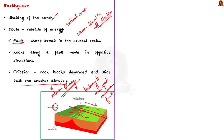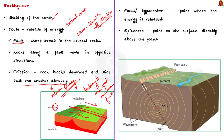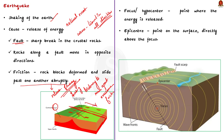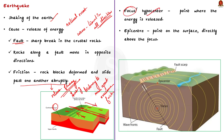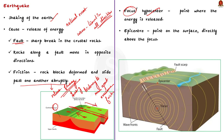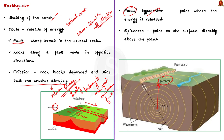The point where the energy is released is called the focus of an earthquake, also known as the hypocenter. The energy waves traveling in different directions reach the surface. The point on the surface nearest to the focus is called the epicenter — it is the first to experience the energy waves and is located directly above the focus.